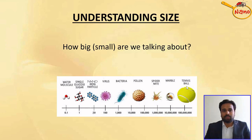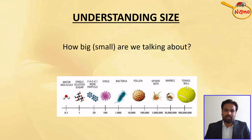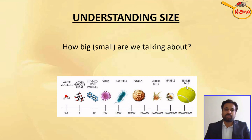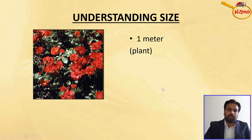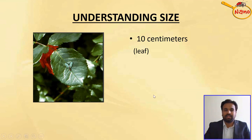Before going further into nanotechnology, we will understand how small the word 'nano' is. Basically, 1 nanometer is equal to 10 to the power of minus 9 meters. We will compare the size of nano with objects whose sizes are already known. Let us take the example of a flowering plant, which has a length of some meters. If you zoom in further, we can see the leaflets, which are approximately 10 centimeters in size.